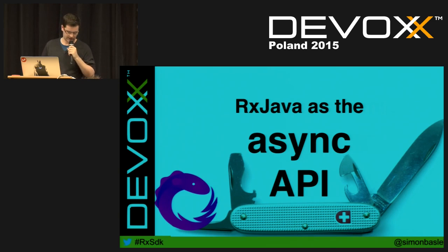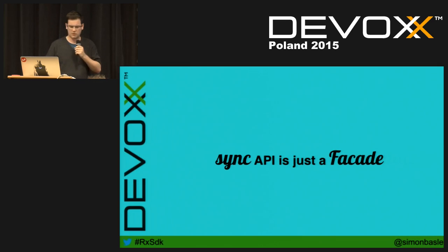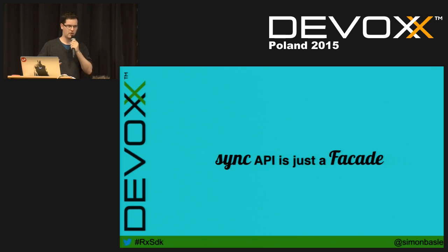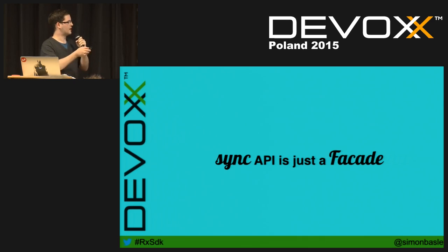How did we approach things? First, we started using RxJava as the internal async layer of the SDK. Then it occurred to us that this works well for users as well. The sync API could just be a facade on top of the async API, and we would provide an async API based on RxJava. We want to expose a sync API first because not all developers are familiar with async processing and may not want to learn Rx right away.